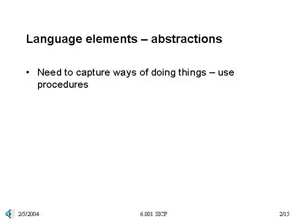So far, we've seen primitives — numbers and built-in procedures — we've seen means of combination, ways of creating complex expressions, and we've gotten our first means of abstraction, namely a way of giving a name to something. But we're still stuck just writing out arithmetic expressions, as the only procedures we have are the built-in ones. We need a way to capture our own processes in our own procedures, so we need another kind of abstraction.